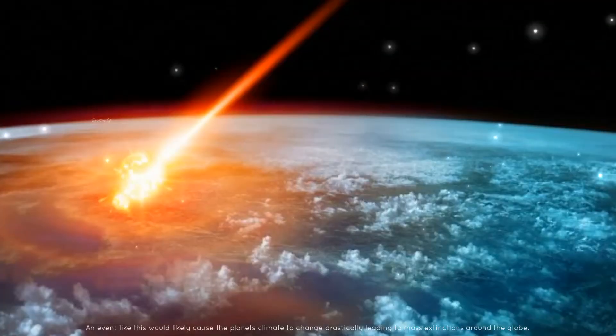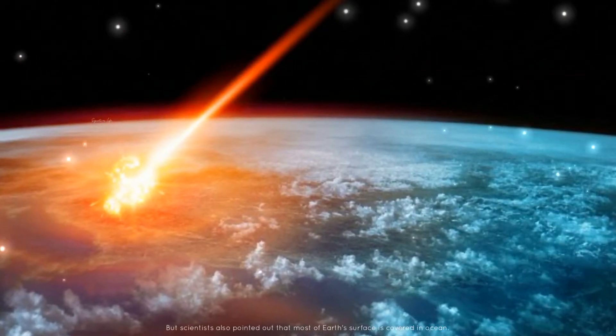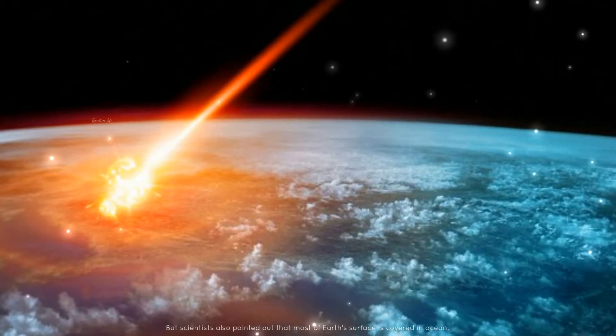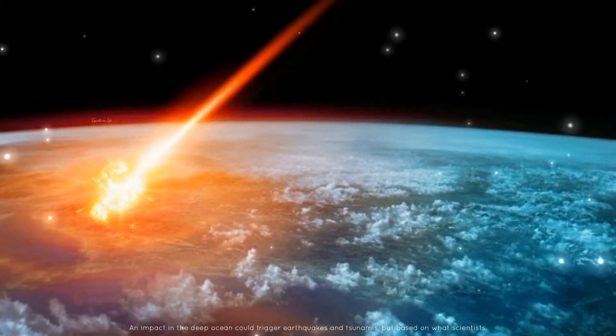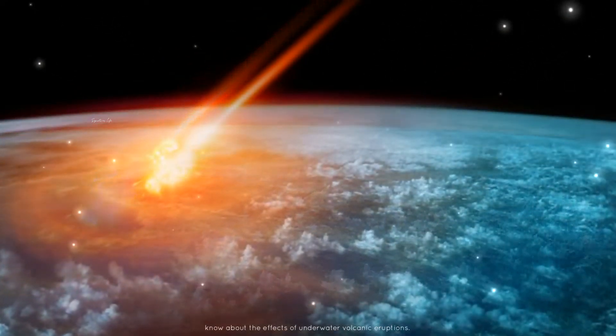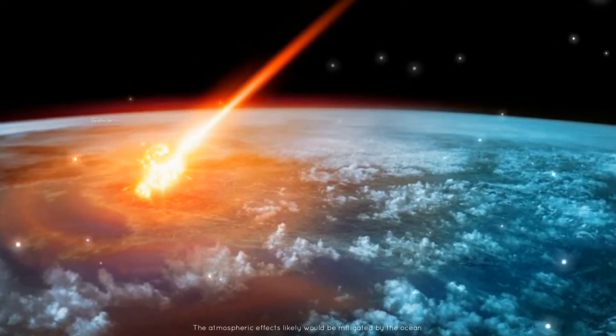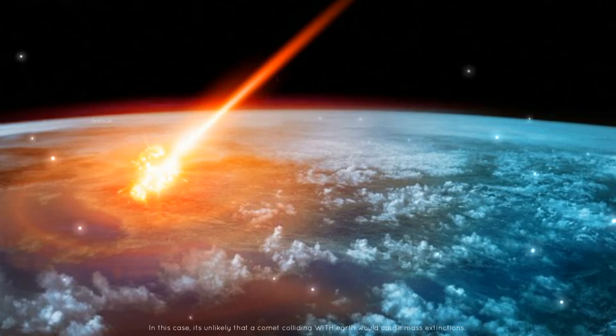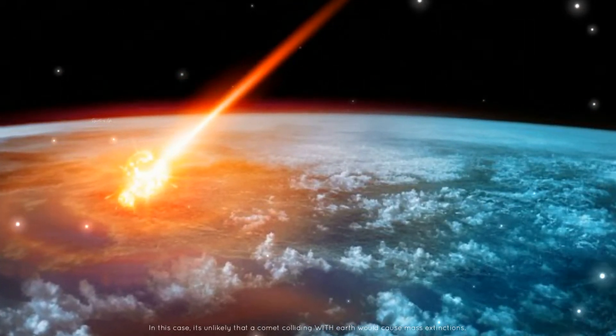Even like this would likely cause the planet's climate to change drastically, leading to mass extinctions around the globe. But scientists also pointed out that most of the Earth's surface is covered in ocean. An impact in the deep ocean could trigger earthquakes and tsunamis, but based on what scientists know about the effects of underwater volcanic eruptions, the atmospheric effects likely would be mitigated by the ocean. In this case, it's unlikely that a comet colliding with Earth would cause mass extinctions.